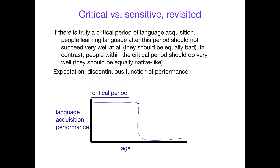If you miss it — even if you just miss it by a little bit — down you go. Whether you start learning here or here or here, you're all equally bad. That's the critical period for language: you're either in it or you're not.